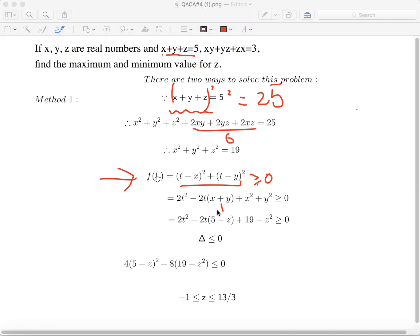We can substitute x plus y and x squared plus y squared, which gives us the function ft equals to 2t squared minus 2t times 5 minus z plus 19 minus z squared, bigger or equal to 0.